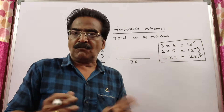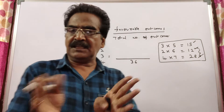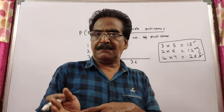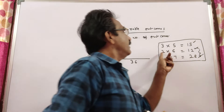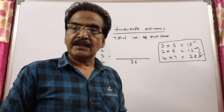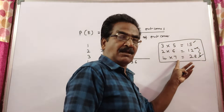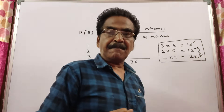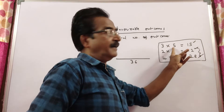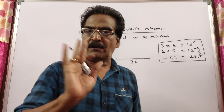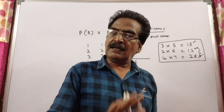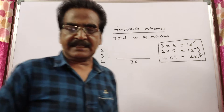Now we want favorable outcomes — we want the product of the two numbers to be even. When the product of two numbers will be even: if both the numbers are even, the product is even. If one number is even, then also the product is even. Only when both the numbers are odd, the product is odd. In other cases, the product is even.